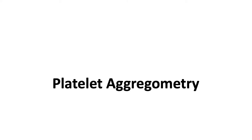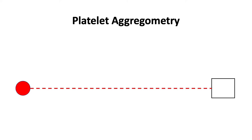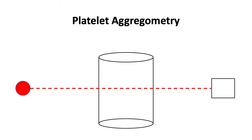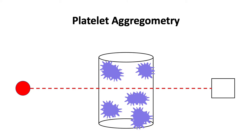We test this process in the lab using platelet aggregometry. Platelet aggregometry makes use of a light source which emits light that is measured by a detector. Between the light and the detector is placed a clear container filled with a suspension of platelet-rich plasma. Light does not pass through to the detector until an agonist is added, beginning the process of platelet aggregation. The resulting light transmission is detected and recorded as a function of time. The data is shown as a graph with percent aggregation on the y-axis and time in seconds on the x-axis.